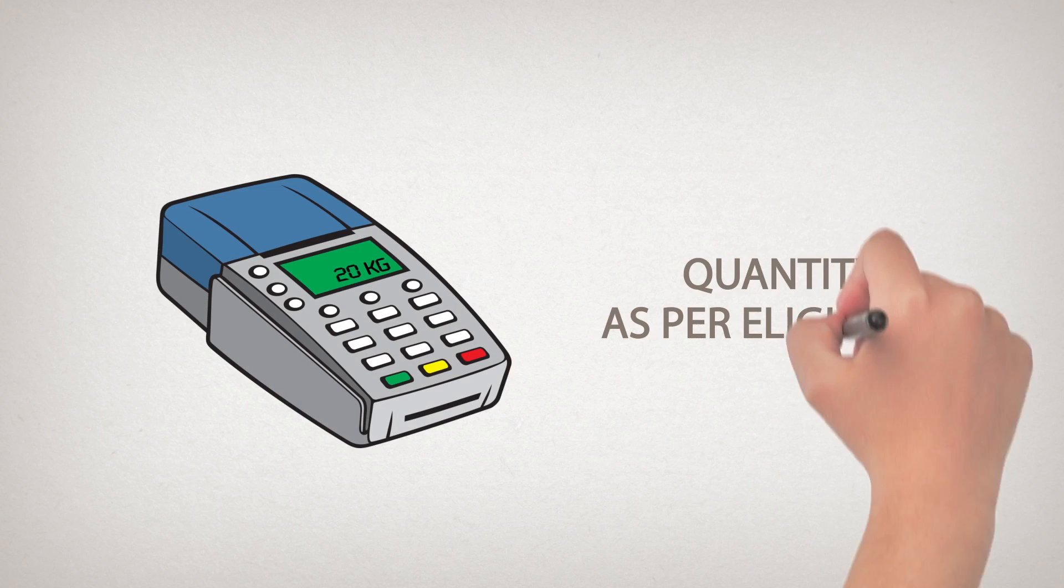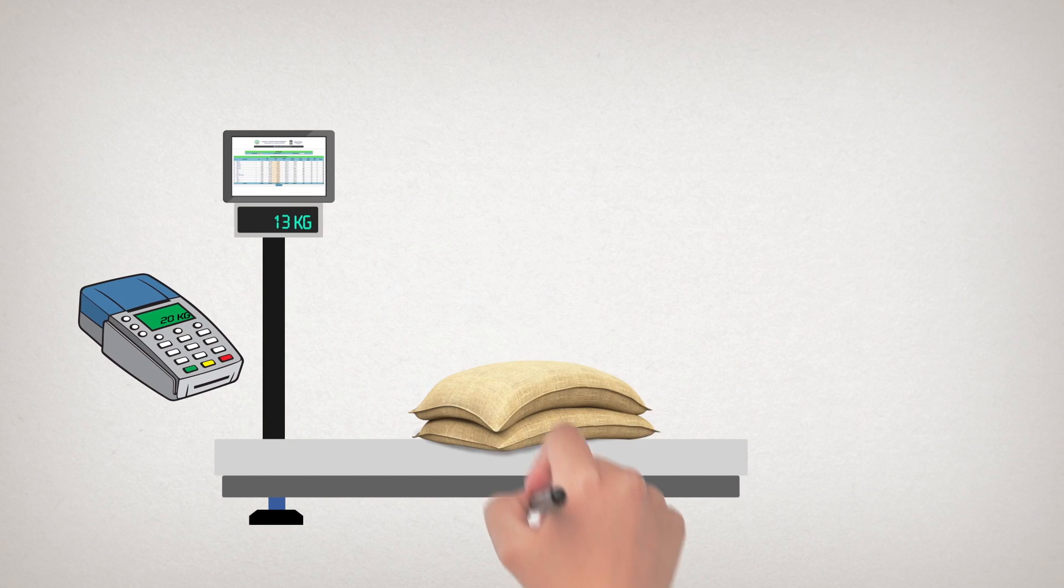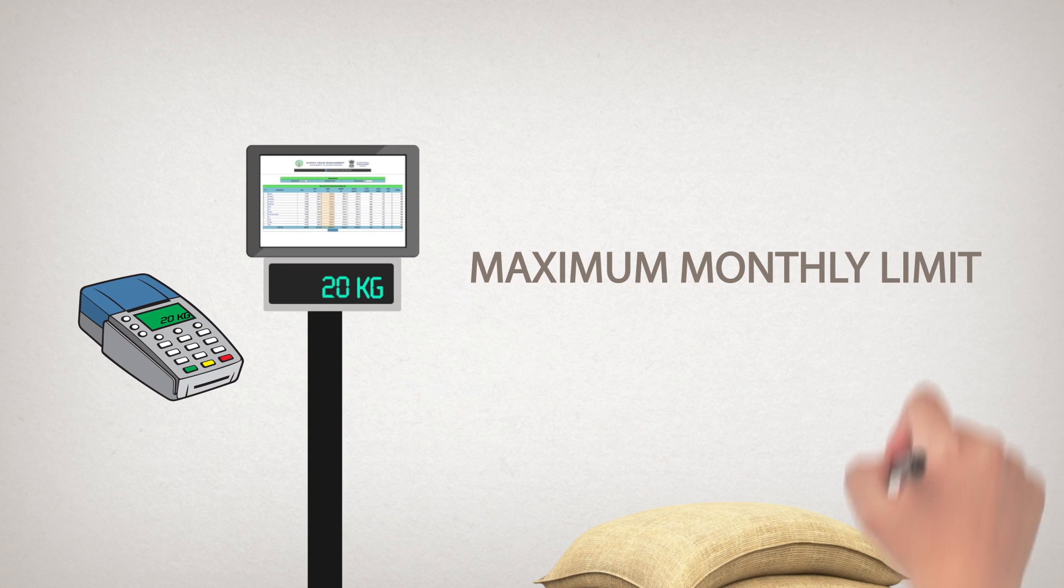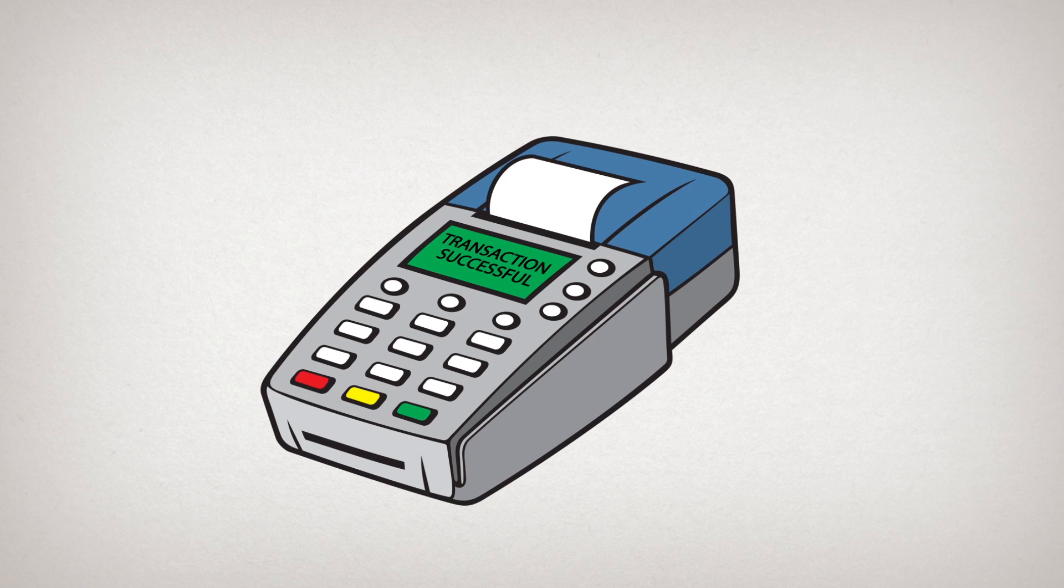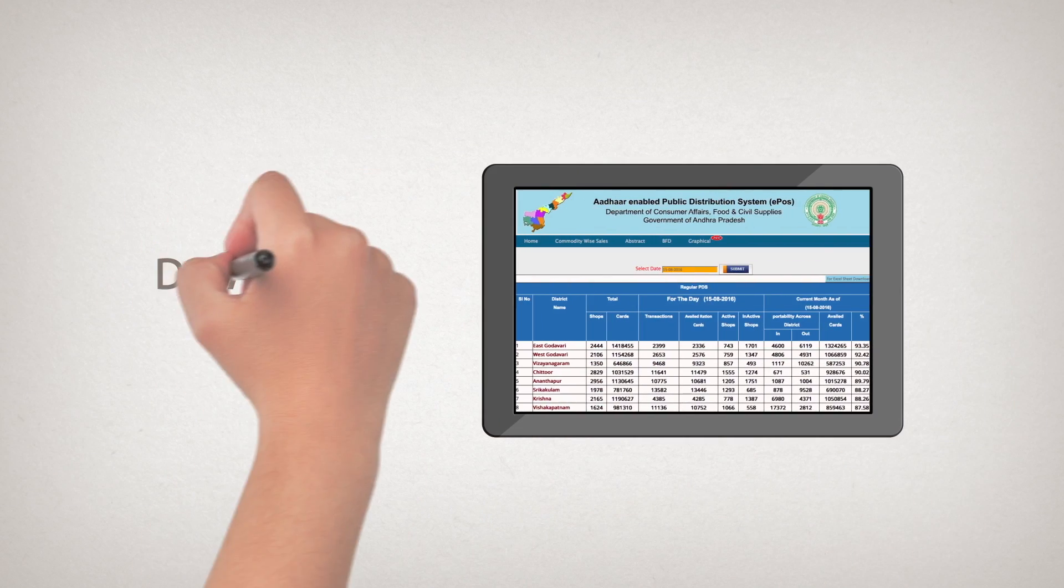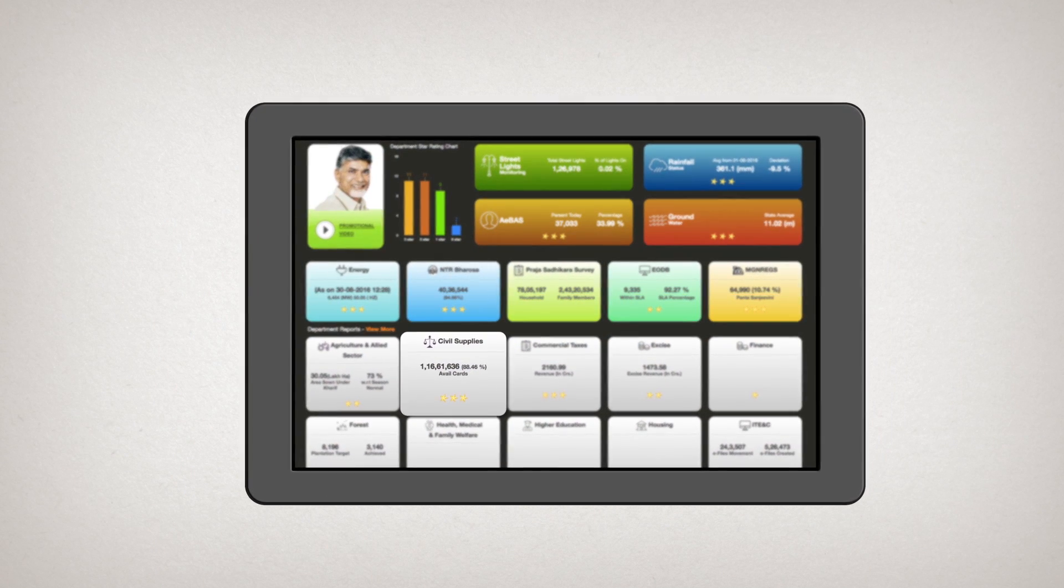Upon authentication, the quantity as per eligibility is reflected on the EPOS screen. Only once the exact allotted amount is put on the EPOS connected weighing scale, a receipt is generated and the transaction is completed. The completed transaction data flows real-time to the Chief Minister's core dashboard.